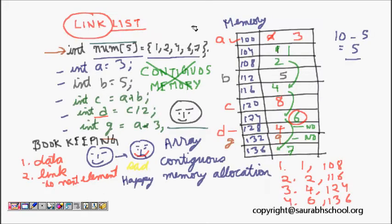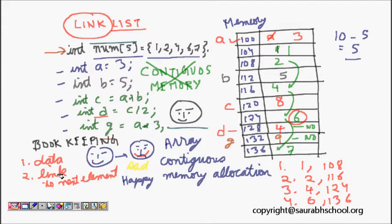We saw why we need linked lists. The example was that we have memory for storing 10 integers — initially five integers were stored randomly at different memory locations. Now if we had to store an integer array of size five, even though five memory locations are left, because they are not contiguous we cannot store that array. The memory manager was in distress, but what helped him was a data structure called linked list.